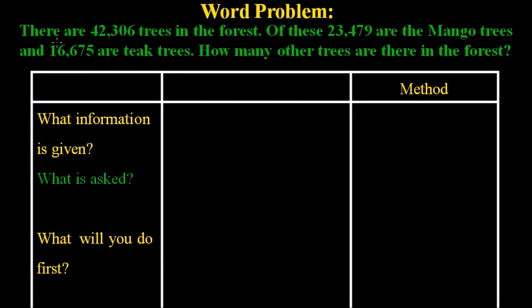The problem is: there are 42,306 trees in the forest. Out of these, 23,479 are mango trees and 16,675 are teak trees. How many other trees are there in the forest? While solving this type of problem, we must think carefully about the given information.